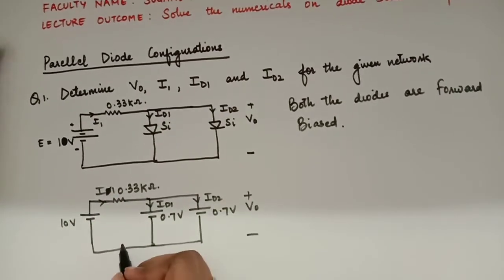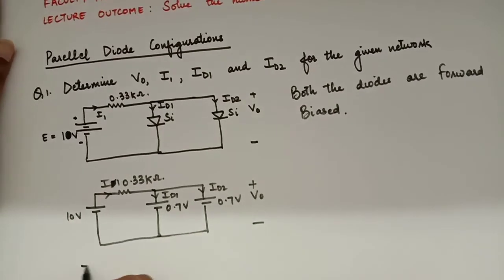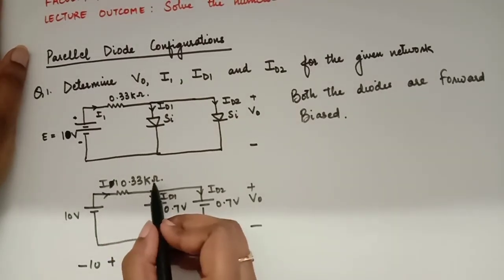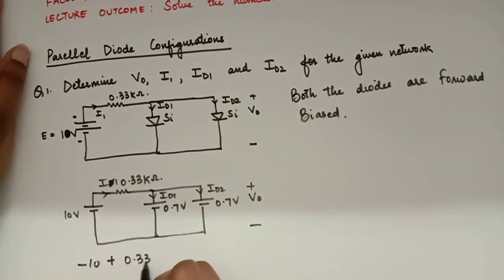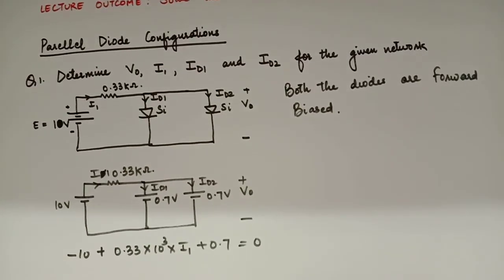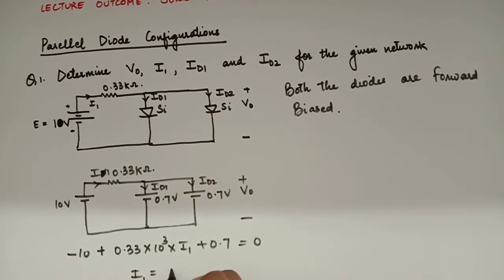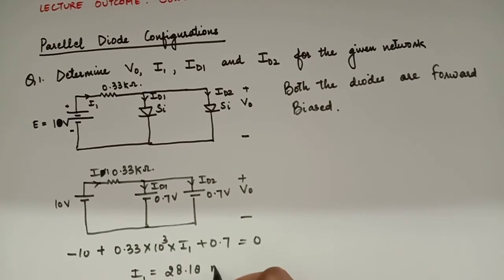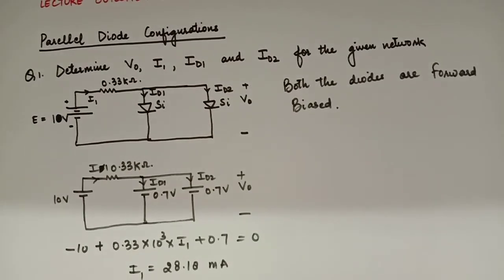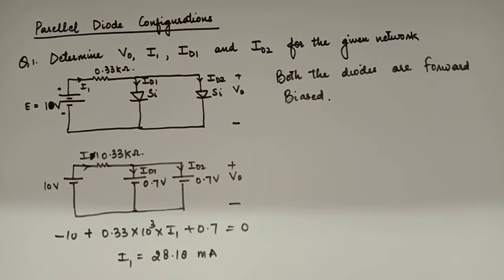So, let's start applying KVL from a space where it is a simple wire. That is minus 10. Plus, now this is resistance. Let's convert it into voltage. 0.33 into 10 raised to the power 3 into I1 plus 0.7. That's all. Now, we have all the voltages here in this equation. And from here, I1 will come out to be 28.18 milliampere. So, that is the I1 from this equation. So, we all have got I1 equals 28.18 milliampere.